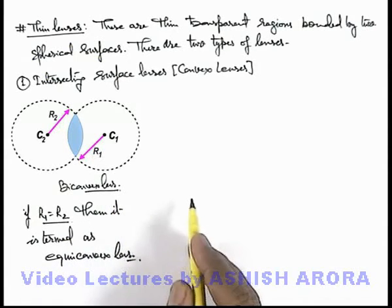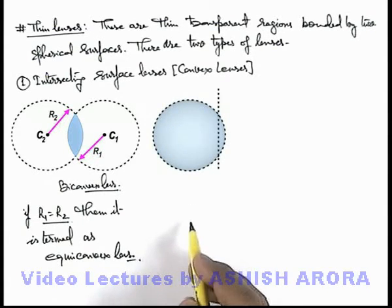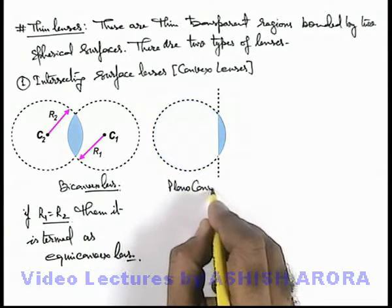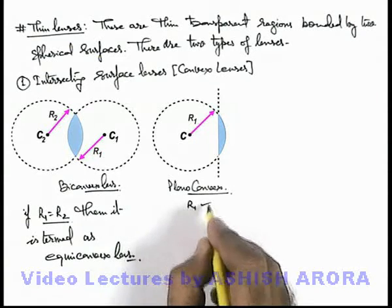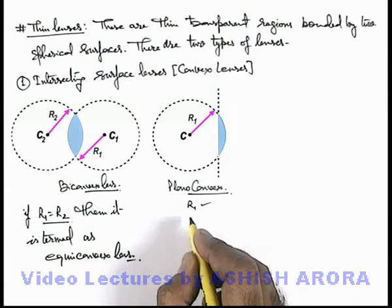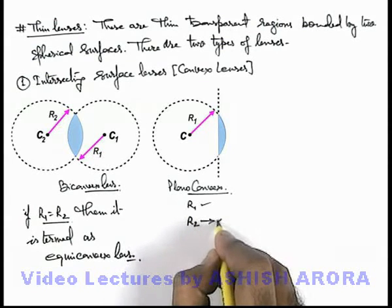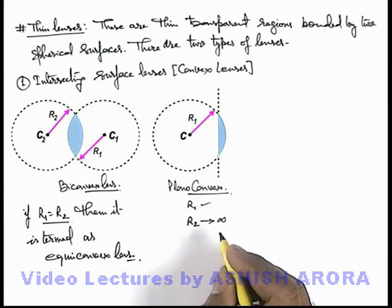Another type of convex lens is formed when a spherical surface intersects with a plane surface, and the region bounded between the 2 surfaces is defined as a plano-convex lens. Here r1 is the radius of curvature of one surface, and the radius of curvature of the 2nd surface will tend to infinity because one surface is plane, which has infinite radius of curvature.